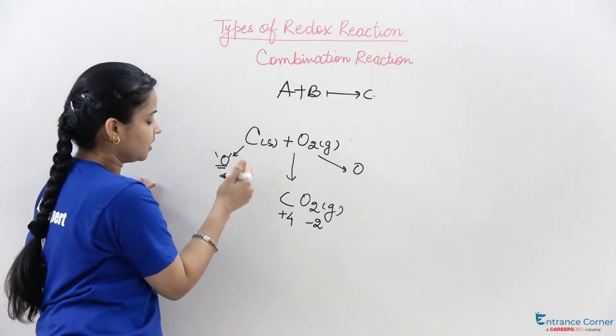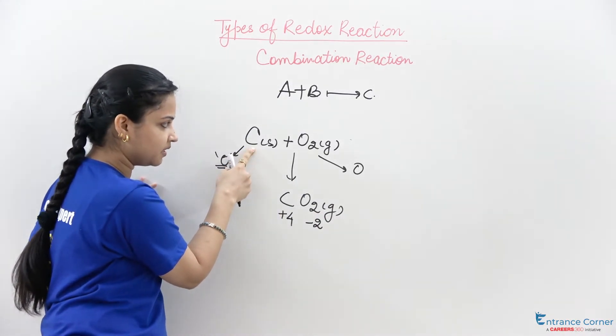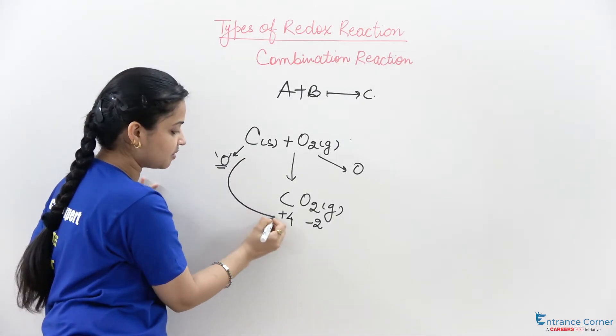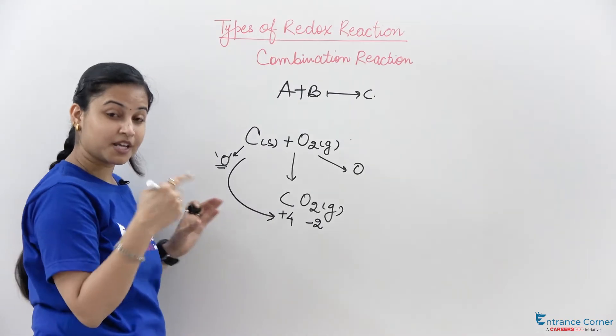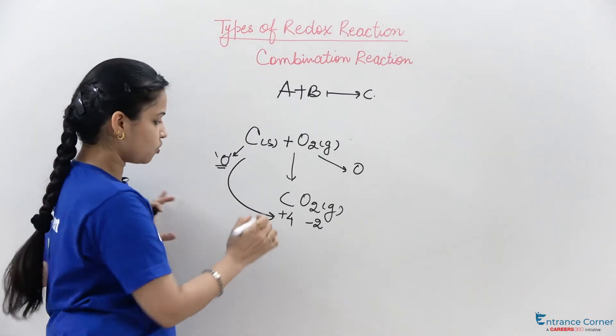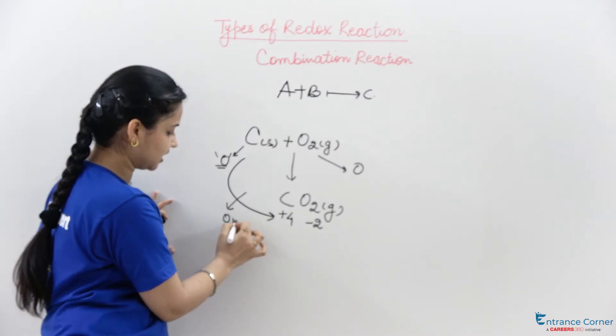What you're seeing is that carbon in the elemental state was present in zero oxidation state, now it is present in plus four oxidation state. Plus four oxidation state means there is loss of electrons, so oxidation is taking place.